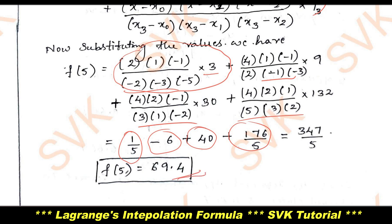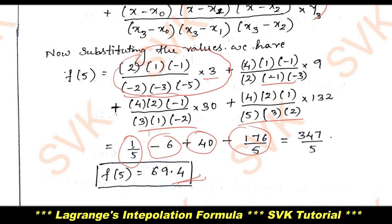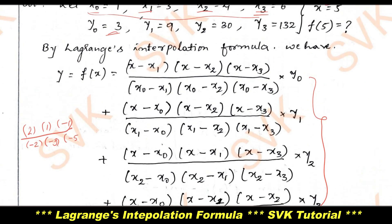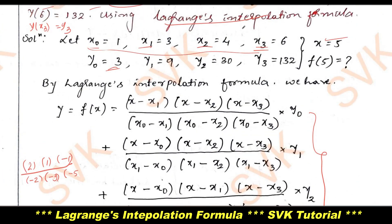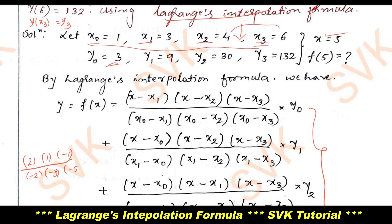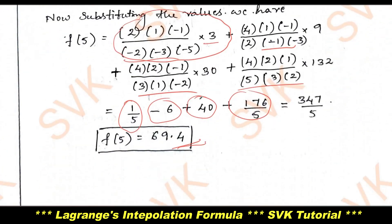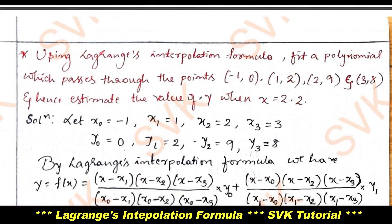So f(5) by using Lagrange's interpolation formula is 69.4. Since the given data has unequal intervals, we use Lagrange's interpolation to find the interpolating value at x=5, which lies between 4 and 6. Let us move on to the next problem — the concept is the same.